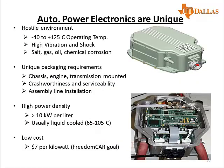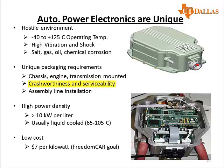These automotive power electronics are unique. They have to withstand a hostile environment: minus 40 to 125 degree Celsius operating temperature, high vibration and shock, chemical corrosion, oil spills, gasoline leaks, and salt. The packaging requirements include chassis, engine, and transmission mounting, as well as crash worthiness, serviceability, and assembly line installation. Power density has to be greater than 10 kilowatt per liter or 10 kilowatt per kilogram.